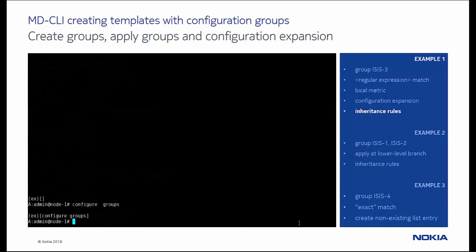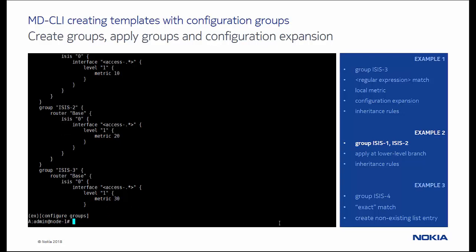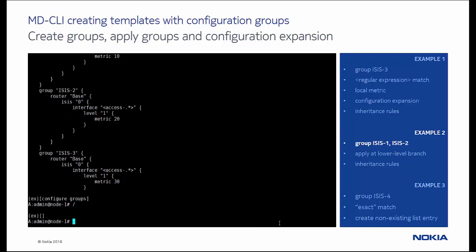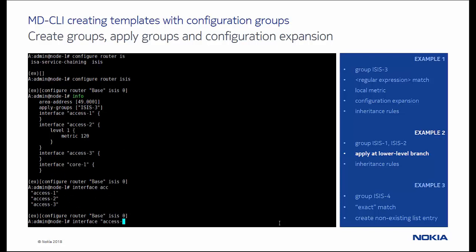For the next example, we copied isis3 to two new groups, isis1 and isis2. In the first group we set metric 10, and in the second, metric 20. Next, we apply both groups at a lower level in the ISIS configuration branch, namely under interface access 3.